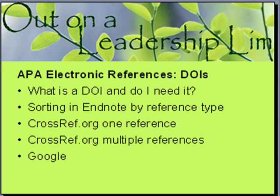That is how to collect your DOIs and do them in multiples at a time. If for some reason CrossRef doesn't find it, you can find some of them by searching the article in Google. InformaWorld, for example — sometimes CrossRef doesn't find those because they're international journals. So sometimes when you're Googling or even as you're searching, you'll see the DOI, and if you see a DOI for a journal article you're using, make sure you get it into EndNote.